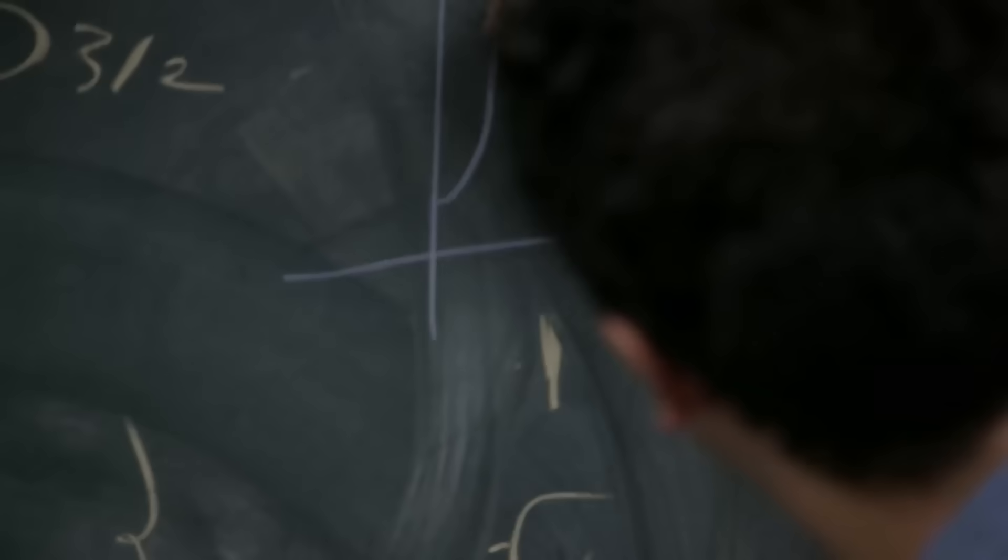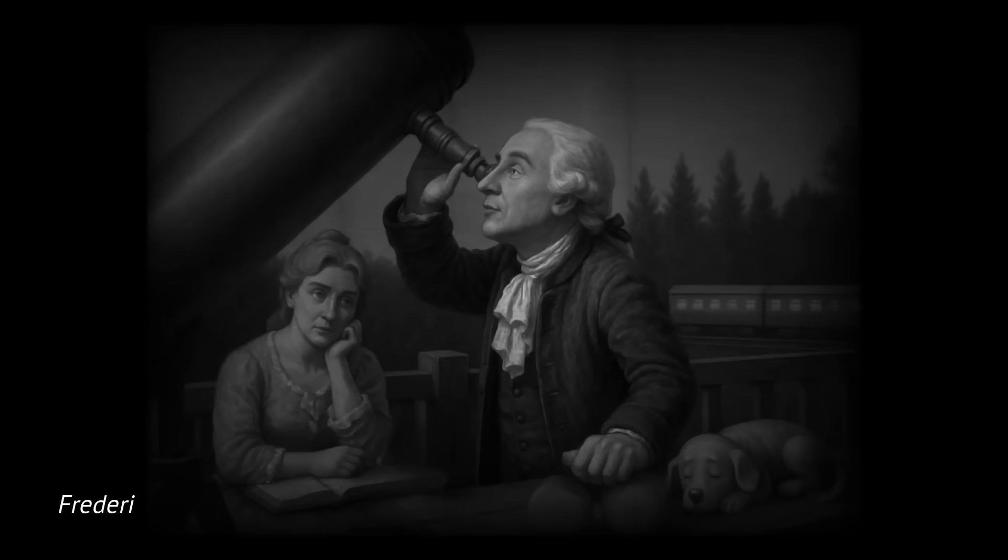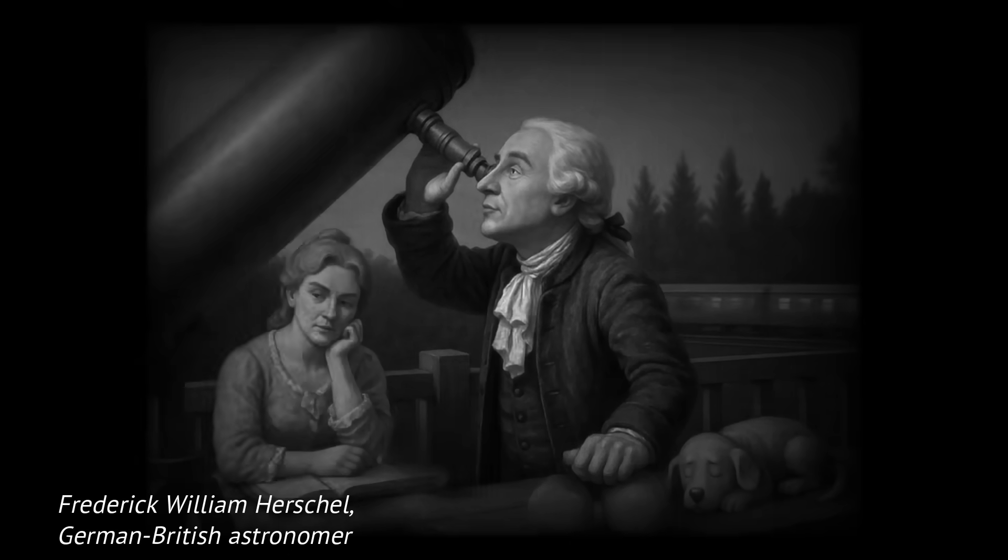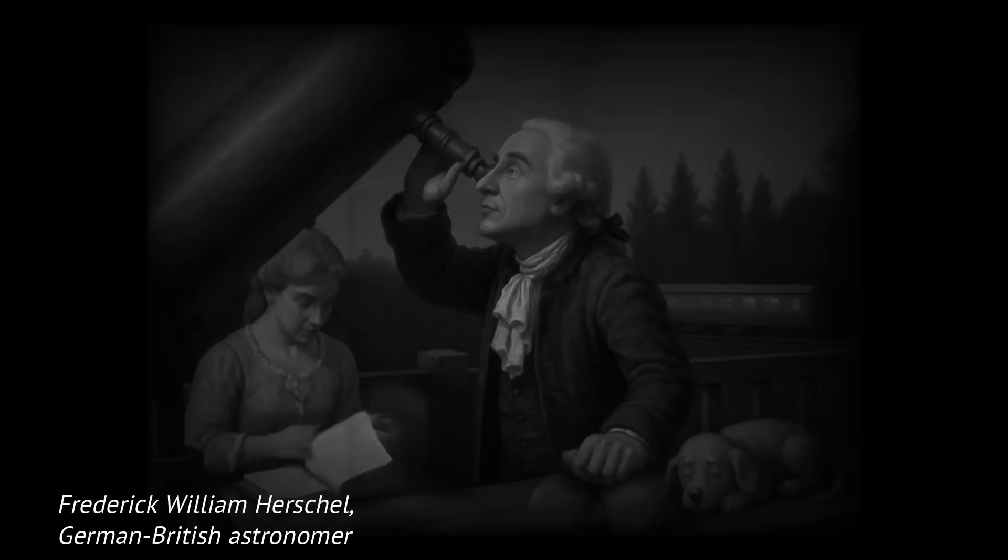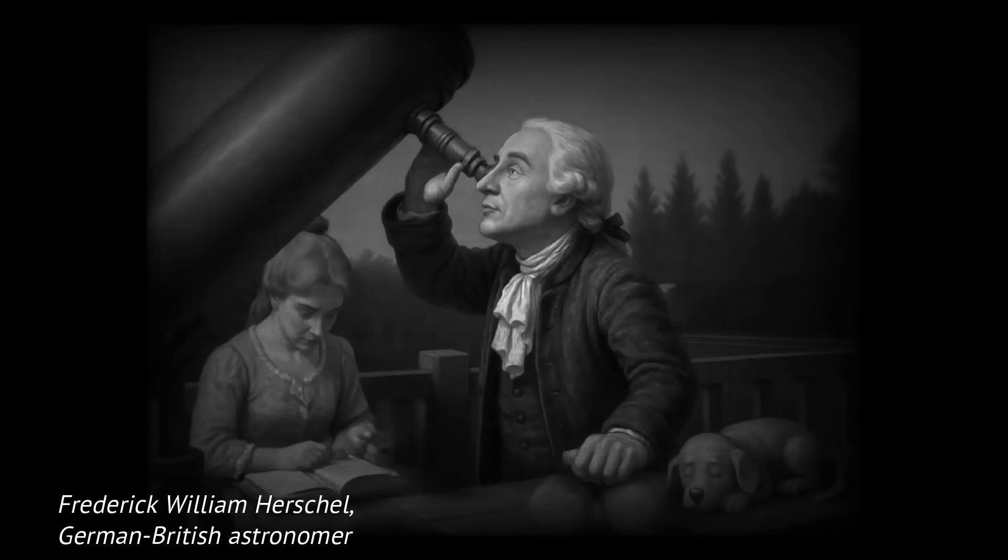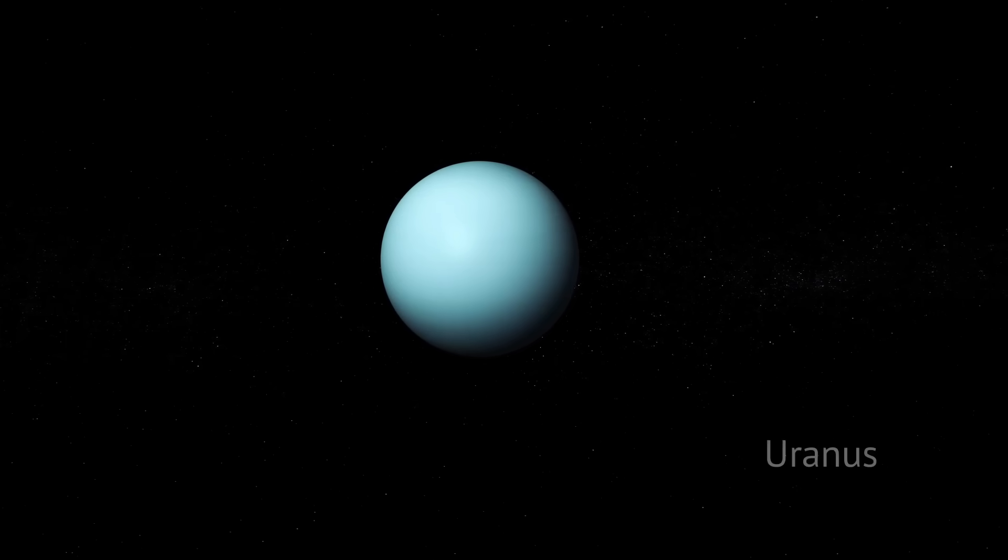But why do astronomers even think Planet 9 exists in the first place? In 1781, an English astronomer named William Herschel was scanning the sky with a telescope he built himself. He was looking for comets, but instead, he stumbled upon a new object that didn't quite behave like a comet. Over time, astronomers realized this object was orbiting the sun like a planet, slow, steady, and distant. They named it Uranus.